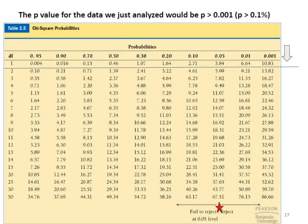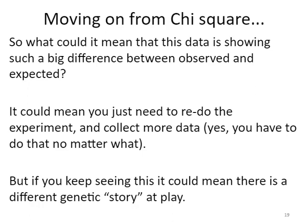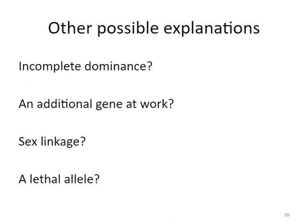So what do I do next? I'm going to have to redo the experiment and collect more data. If I keep seeing the same patterns, I'll know there's a different genetic story at play and I'll have to question what that is. I might have a situation where there's incomplete dominance, an additional gene at work, some environmental factor influencing things, a lethal allele reducing counts in one phenotype category, or sex linkage playing a role. I don't know, but I'm going to have to look for other explanations. That concludes this video lecture on the use of chi-square goodness of fit in simple genetic problems.